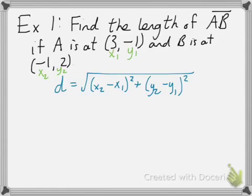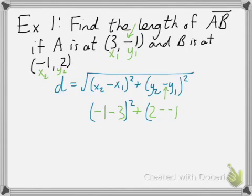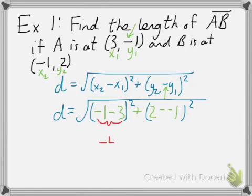Alright, so let's put in the numbers. x2 is going to be negative 1 minus 3. Then we'll have y2 being 2 and y1 being negative 1. Notice that we have a minus sign here, and when we plug in for y1, we have a minus sign that goes in. So really we have 2 minus negative 1. Then we can evaluate this step by step. Negative 1 minus 3, well that would be negative 4. Then, 2 minus negative 1 — anytime we subtract a negative number, it's effectively like adding its reverse. So this would be 2 plus 1, which is 3.